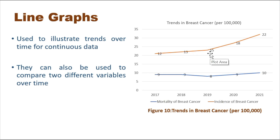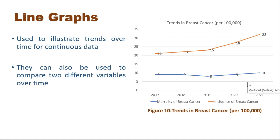Meanwhile, the mortality of breast cancer is almost constant. There can be various reasons to identify — one reason may be advancements in treatment, giving better options that reduce mortality. However, this is something we need to identify using different approaches and studies. By just looking at this graph we can observe the trends over time for both breast cancer incidence and mortality.